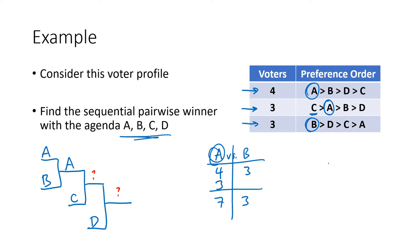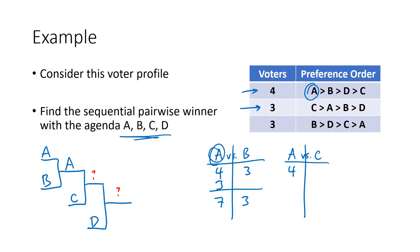Now we have an A versus C election. The four voters in the first row like A the best, so they vote for A. The three voters in the second row like C the best, so they vote for C. The three voters in the third row like B the best, but B is not a choice; they like D second best, but D is not a choice either, so they vote for their third choice, which is C. So C wins this election six to four, A gets eliminated, and C moves on to the final round facing D.